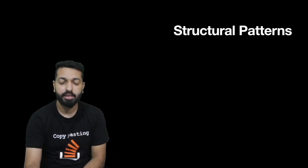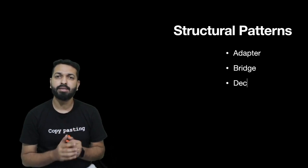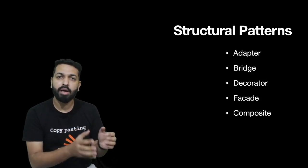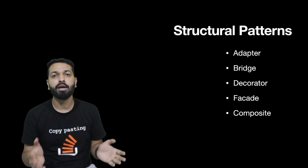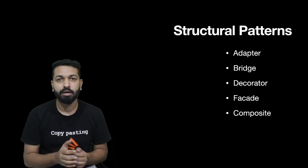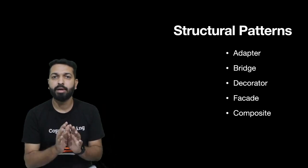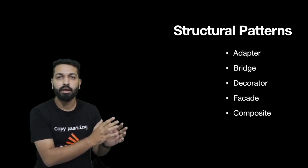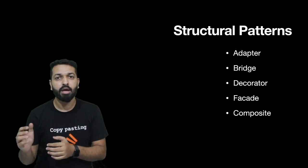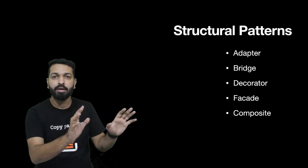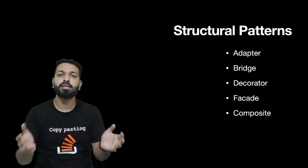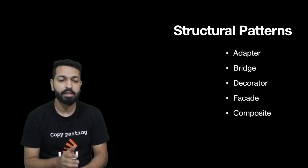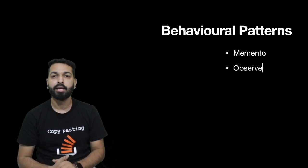The second category is structural patterns. Structural patterns are concerned with the composition of a class or entity — how a class should be composed so that it contributes to building a larger structure. For example, facade: the literal meaning of 'facade' is the front of a building. When you look at a building from the front you're not concerned with the plumbing, power supply, or wiring. Structural patterns focus on composition and identify relationships between entities.